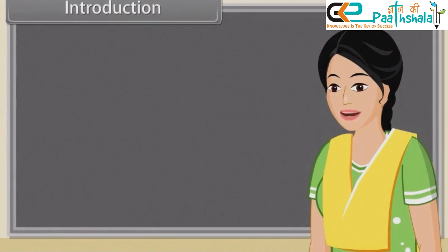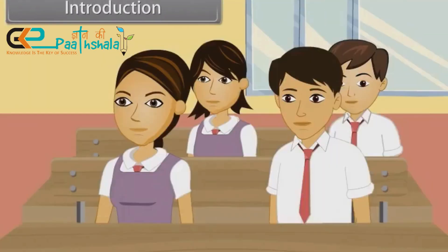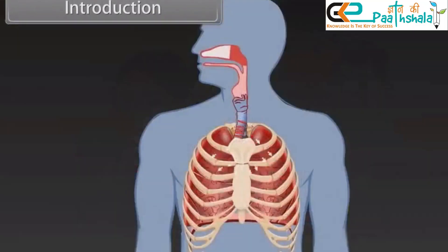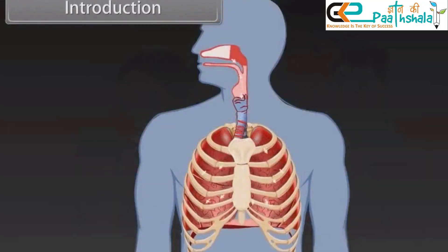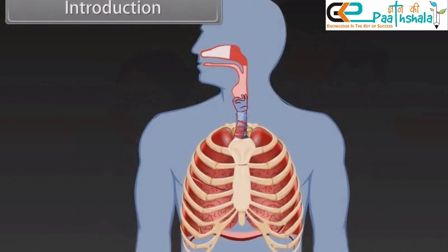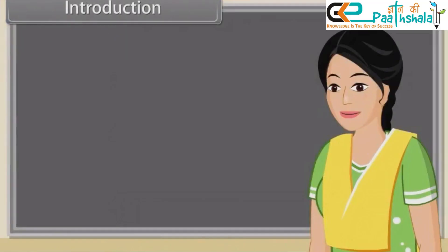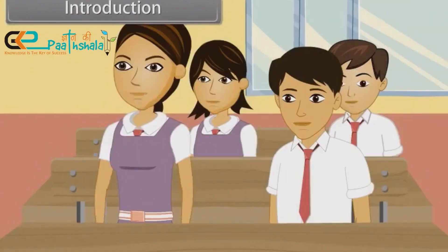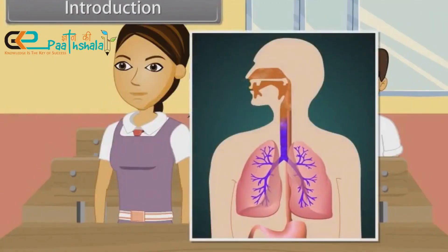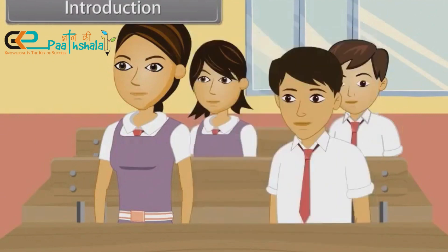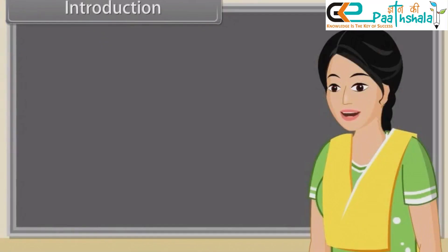Can anybody tell me how do we breathe? Ma'am, breathing is a process in which air is inhaled due to muscle contraction and then exhaled due to muscle relaxation. Very good, Rahul. And what are the respiratory organs in humans? Ma'am, humans have lungs which help them to exchange gases with the environment. Very good, Rekha.